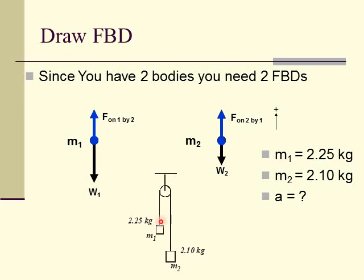Now we establish our coordinate system — this is where it gets a little tricky. I know this object will go up, so I'm going to say up is positive. But here's the tricky part: if up is positive for mass 2 going up, then mass 1 is going down — it would have a negative acceleration. We want both objects to have the same acceleration since they're tied together. So I'm going to establish a coordinate system for the whole system: up for mass 2 is positive, and down for mass 1 is also positive. That way both objects have positive acceleration.